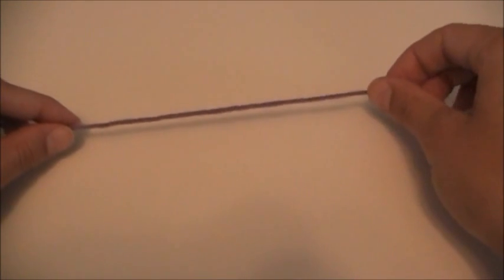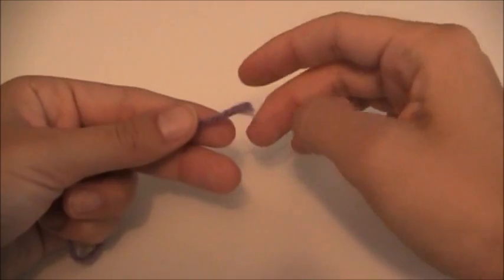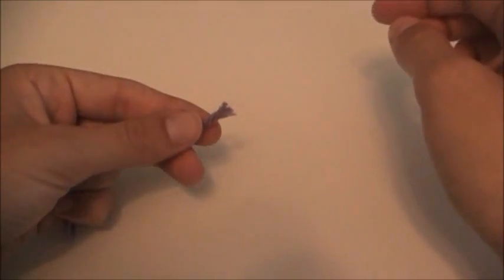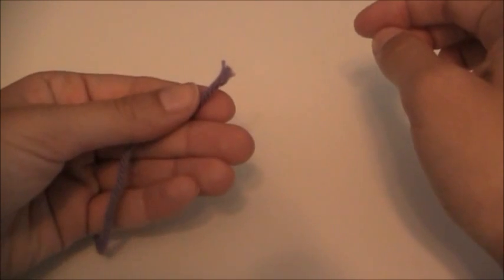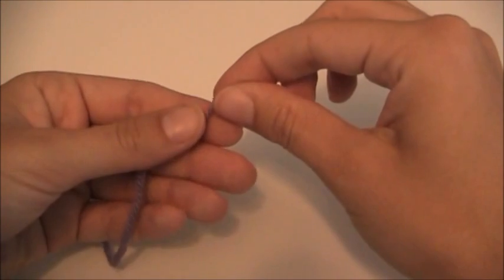The other way of making a slipknot is by wrapping the yarn around your fingers. And to do that, we're also going to be working on the end of the yarn again. Basically, I'm going to be doing almost all of the work in my left hand and I'm just using my right hand to pull my yarn around.